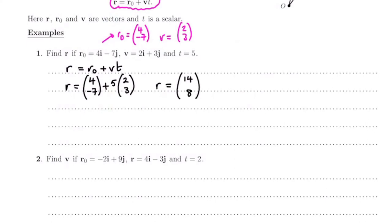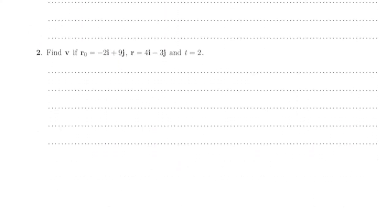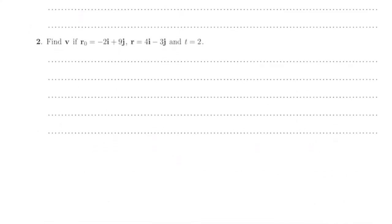So that is your position in column vector form, or you can have it in i's and j's: 14i plus 8j, and that will be meters from the origin. The next one I'm going to use i's and j's so you can see we can convert between the two.